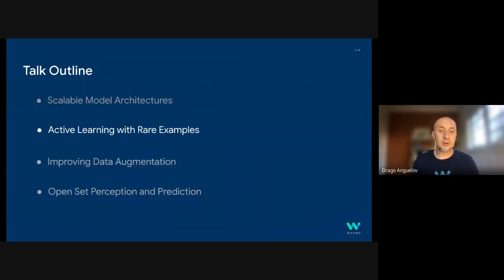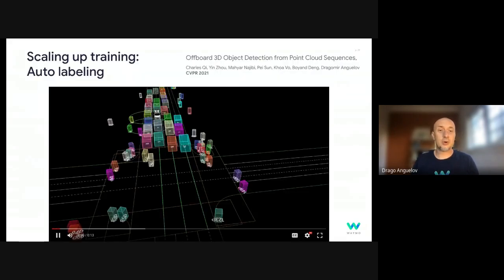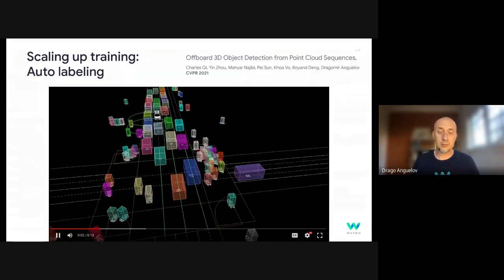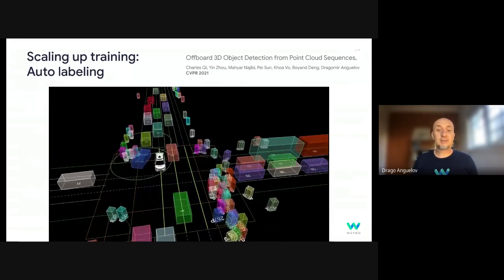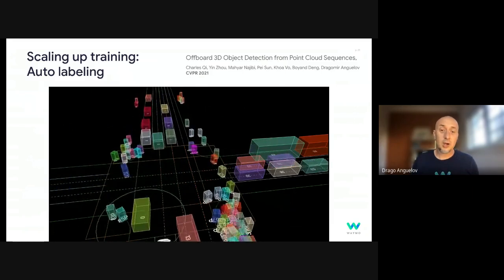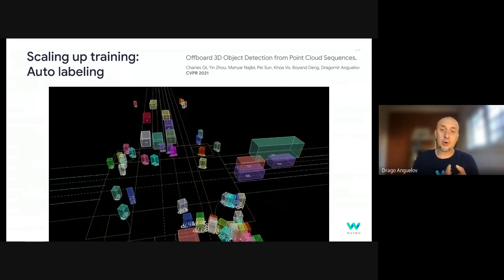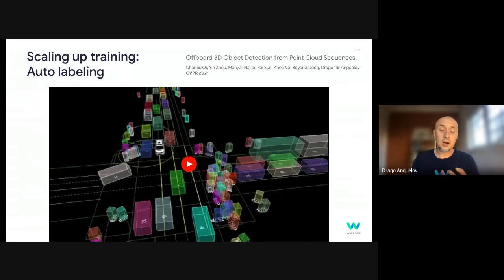Now, I will move to a different topic, which is active learning with rare examples. The story here starts with our auto-labeling work from a year ago. So this work was driven by the idea that after we've collected the examples in the real world on board, we have one, a lot more compute, and two, we have the benefit of seeing how objects look not just in the past, but in the future. And so over long periods of time, we can see how an object looks from all angles, typically, and that allows us to estimate really accurately its shape.